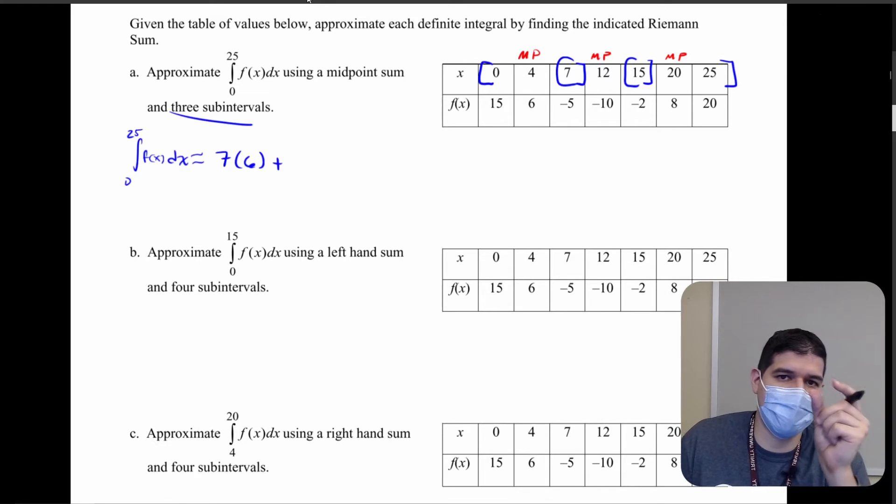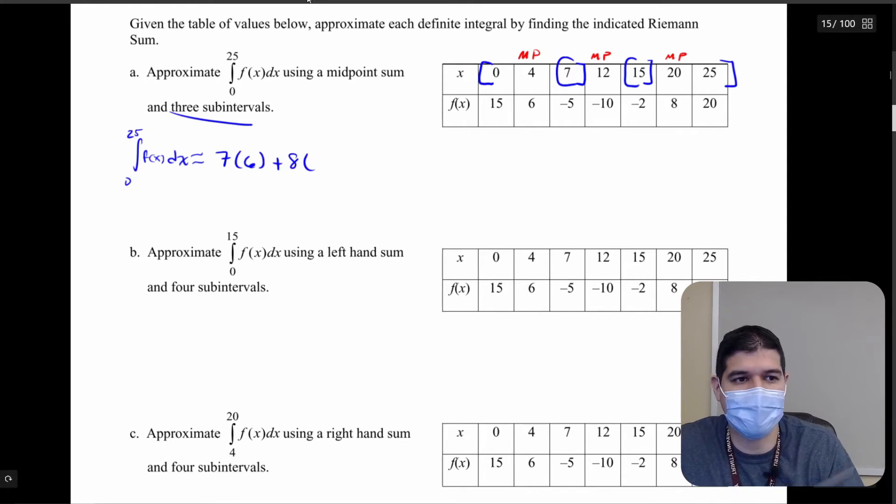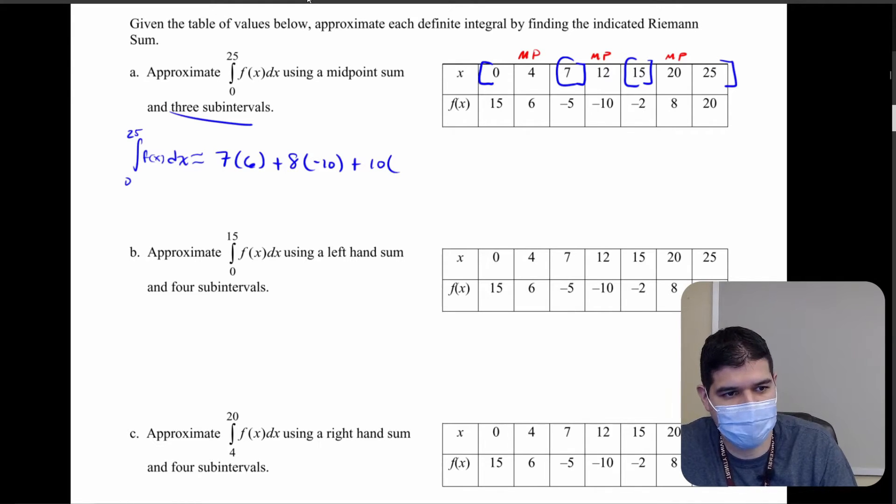Plus, what is the base of our next rectangle? Well that's going to go from 7 to 15 so that is a base length of 8. And what is the height of the midpoint? Well that is going to be negative 10. Plus our final section which is the length between 15 and 25 which is 10 times the height of the midpoint which is f of 20 equal to 8. So we're going to calculate these values so that comes out to be 42 minus 80 plus 80 which comes out to be 42.